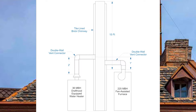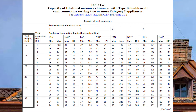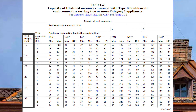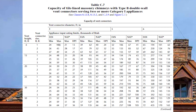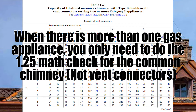For the next example, I have two gas appliances venting into a chimney, both using double wall vent connectors. The first is a 36 MBH water heater with a draft hood and a two-foot vent connector rise. The other is a 225 MBH fan-assisted furnace with a one-foot vent connector rise, and the chimney is 15 feet tall. Because there's more than one appliance with double wall connectors, we go to Table C7. Going down to a vent height of 15 and across on a two-foot rise, NAT DP on the four-inch vent connector is good to 47,000 BTUs — that's good. Note: the 1.25 check does not apply here; that only applies to the capacity of the common chimney.